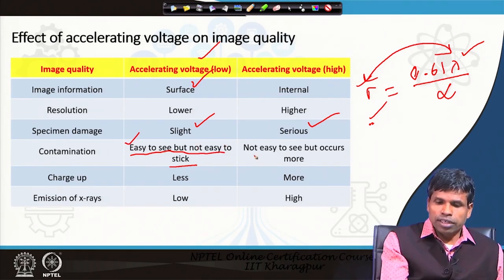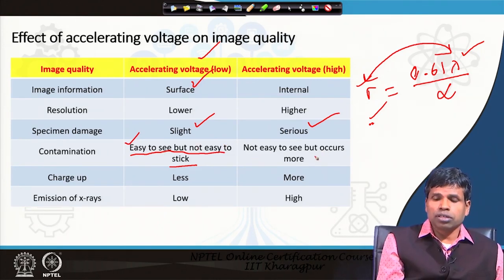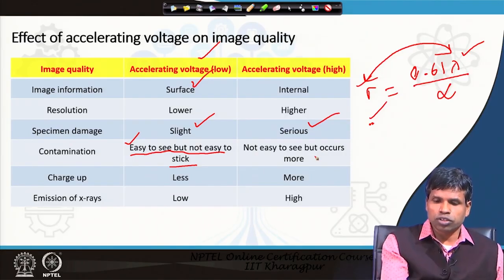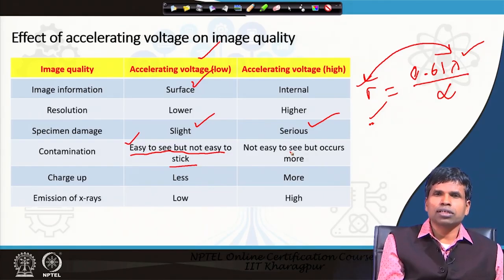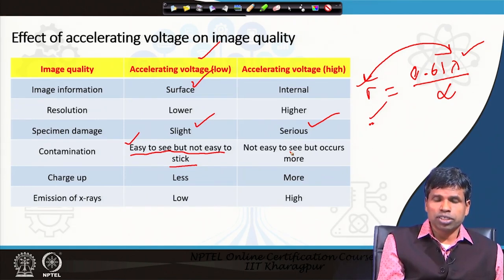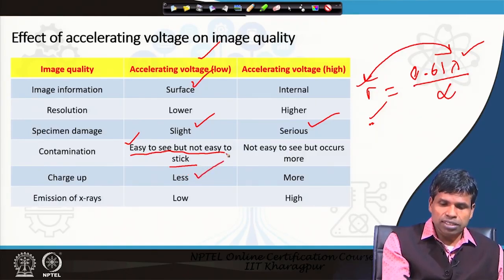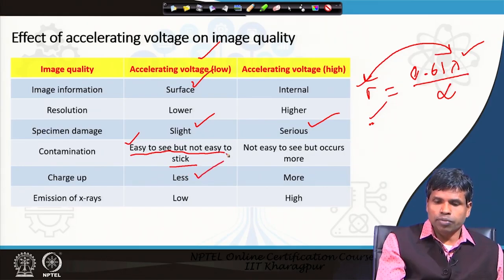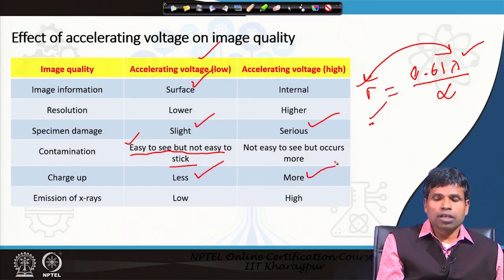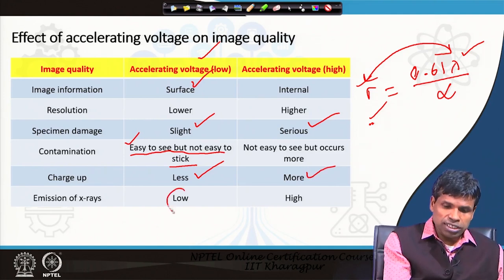At higher acceleration voltage, contamination is not easy to see because most information is coming from below the surface, but more contamination occurs — the higher energy beam more efficiently decomposes gas molecules and deposits more carbon on the surface. Regarding charge-up: as we discussed, lower acceleration voltage means less charge-up, while higher acceleration voltage means more charge-up.